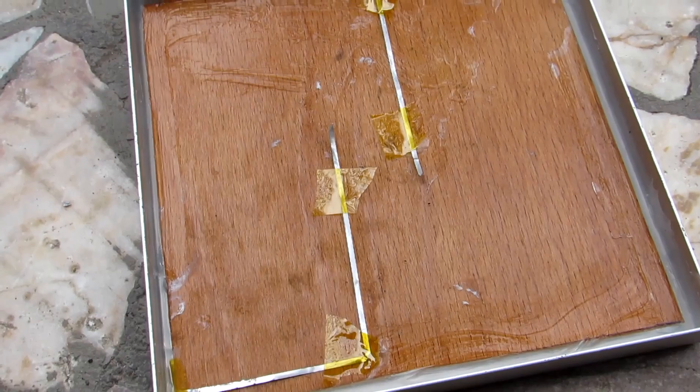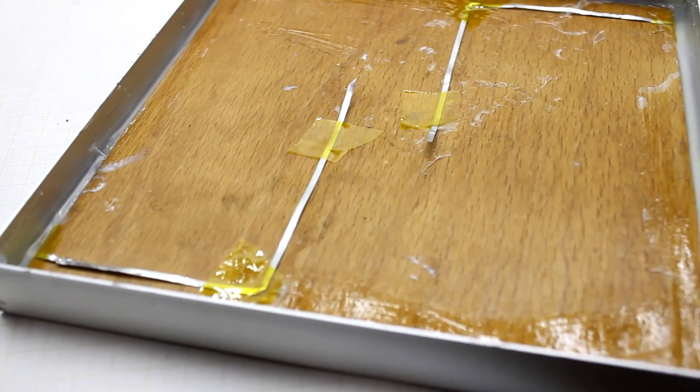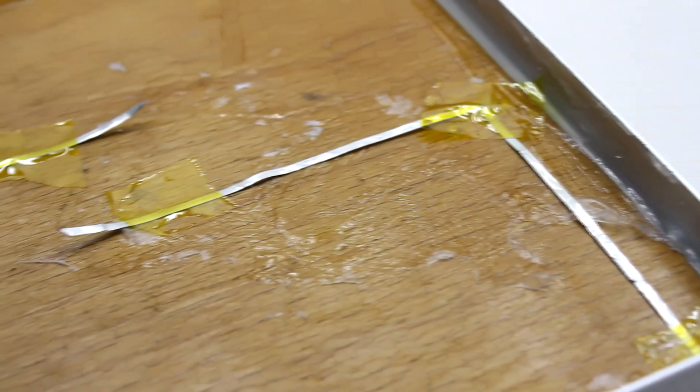As the connecting lines, I use the same tinned stripes that connect modules to each other. Instead of them, you can use ordinary copper wires in isolation.